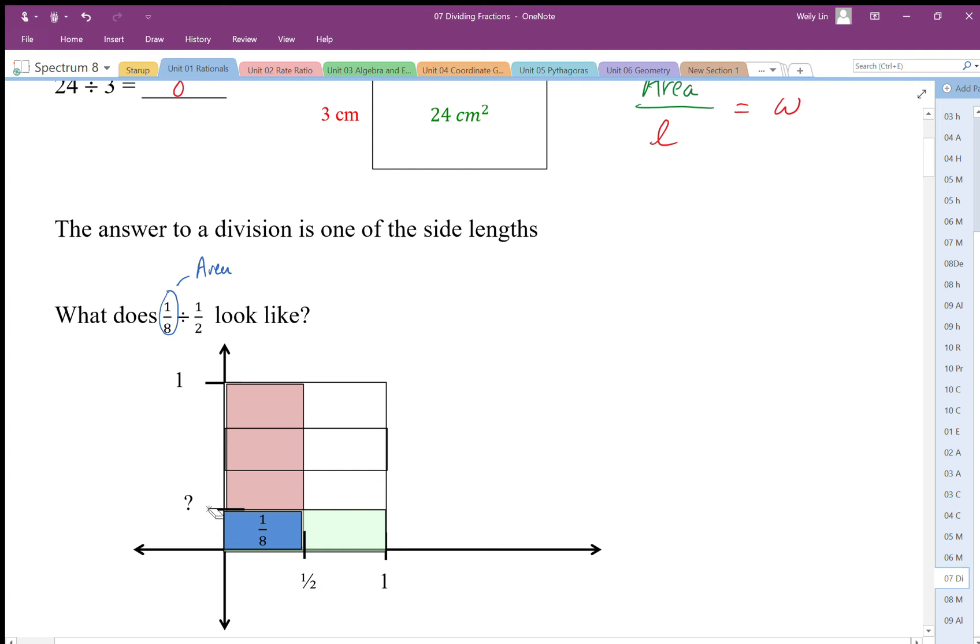So the area divided by the side length equals this width. Or we can change the problem to multiplication—we can just say, well, what times ½ equals ⅛?